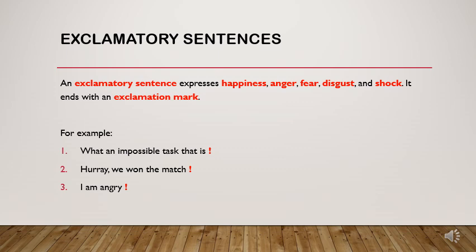The last, the fourth one, is the exclamatory sentence. An exclamation expresses our feelings. An exclamatory sentence will always express our happiness, anger, fear, disgust, or a shocked feeling. It always ends with an exclamation mark. For example: 'What an impossible task that is!' — you know the task cannot be completed and you're using a strong feeling. 'Hooray, we won the match!' — hooray itself is an exclamation. 'I am angry!' — anger is also a strong feeling you're expressing to another person.